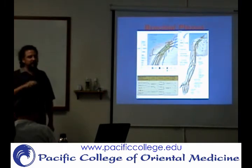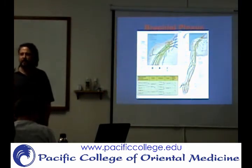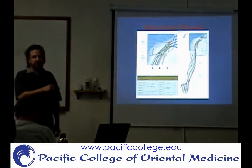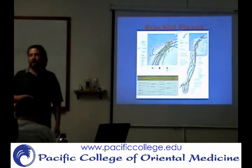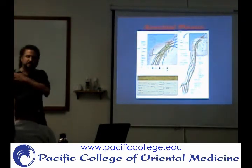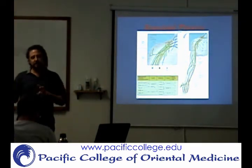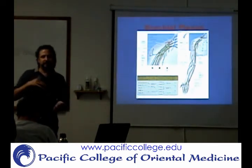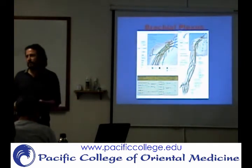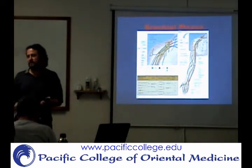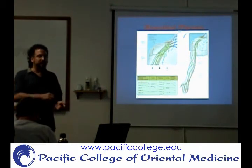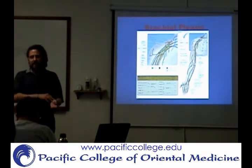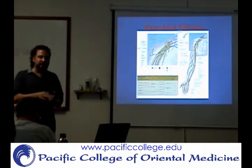When we're talking about dermatomes and myotomes, we're talking about spinal nerve root levels. So we'll talk about what's the distribution for C1, C2, C3, C4, C5. But we'll also talk about the distribution of peripheral nerves — what happens when you have median nerve problems and where the distribution of those nerves is. That's going to be a little bit different.